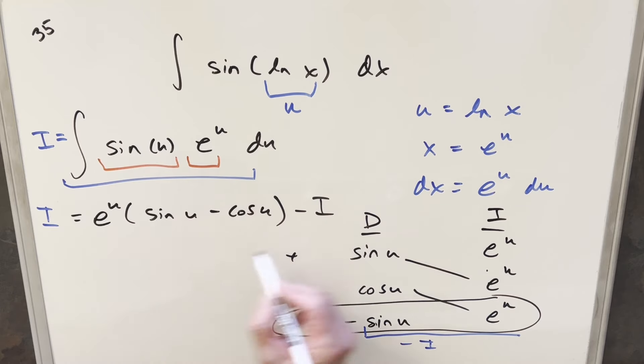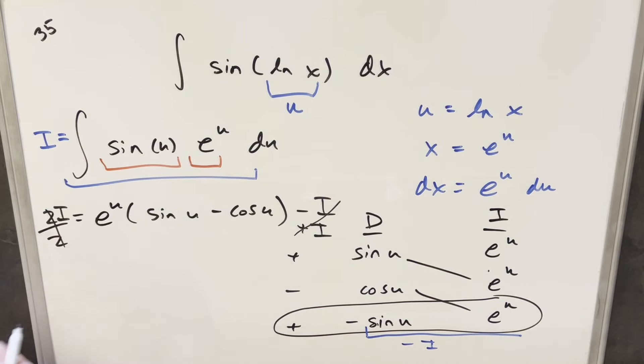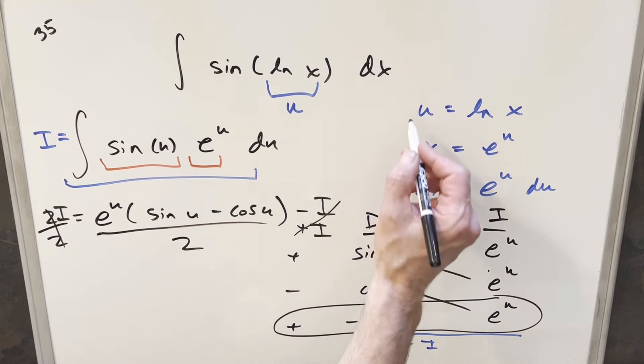Now I can solve for I. Let's just add an I on both sides. And then on the left side, this is just going to be 2I. So I'll just divide off 2 to isolate I, which is our goal solution. And then we have to do it on the right side, so we'll divide everything by 2.